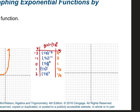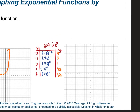So to graph these, we have: negative 2, 9 — up here; negative 1, 3 — here; 0, 1 — here; 1, 1 third — about here; and 2, 1 ninth — gets even closer to the x-axis. So again, you're going to have an asymptote for this one. That's the x-axis, and the line will go up as it goes to the left through these points.